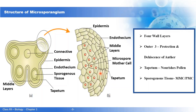In a very young anther, inner to the wall layers you can see the sporogenous tissue. This tissue is a group of homogenous diploid cells, and each cell is a microspore mother cell or pollen mother cell, which is diploid. This microspore mother cell undergoes meiosis to form a microspore tetrad — a cluster of four microspores. This process of formation of microspores from the microspore mother cell through meiosis is known as microsporogenesis.